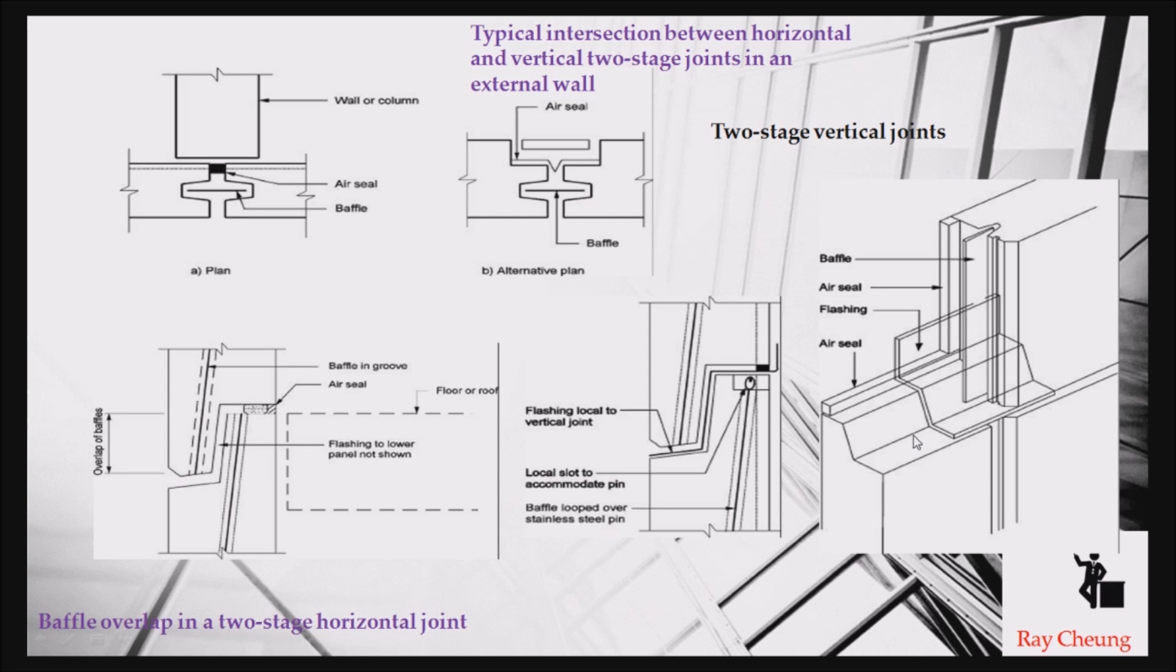You can see the typical common jointing detail. Most likely, the lower part should be facing the external face and the upper portion should be facing the internal one. We need to have flashing in order to not allow any water coming in.